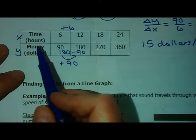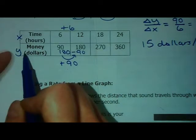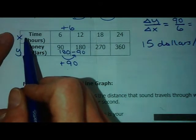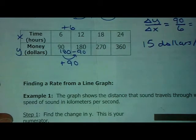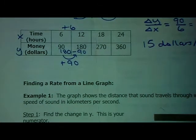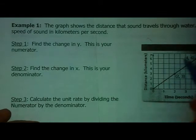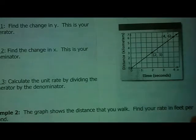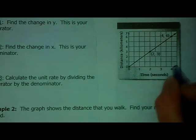Up in the table we saw that to find a unit rate you just take the change in y and divide it by the change in x. These are actually referring to the x and y axis on a graph as well, so we can figure out our unit rate the same exact way on this graph. Here's my x axis and here's my y axis.